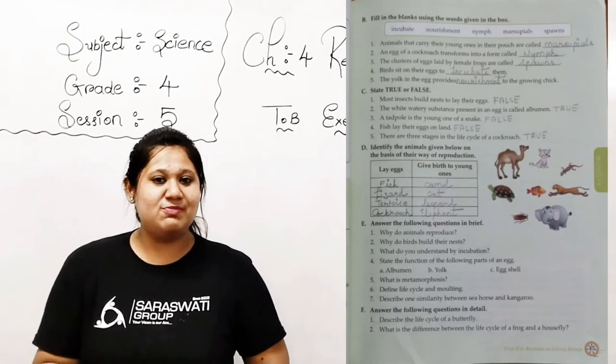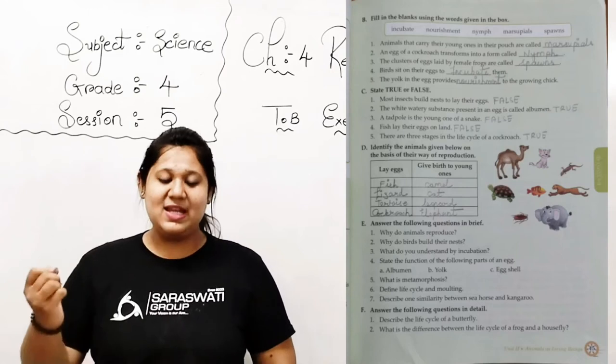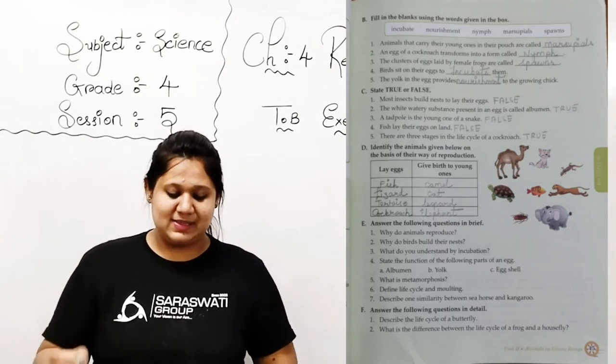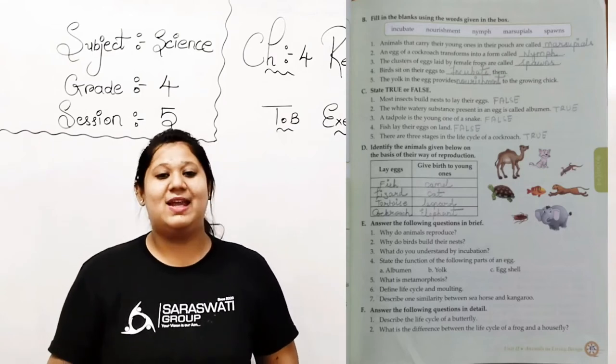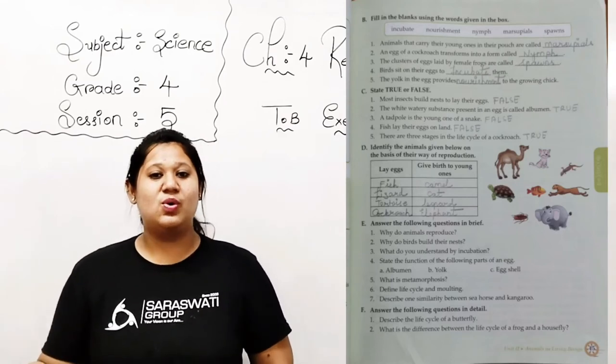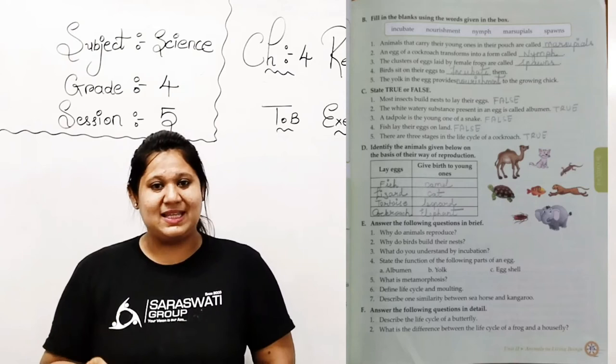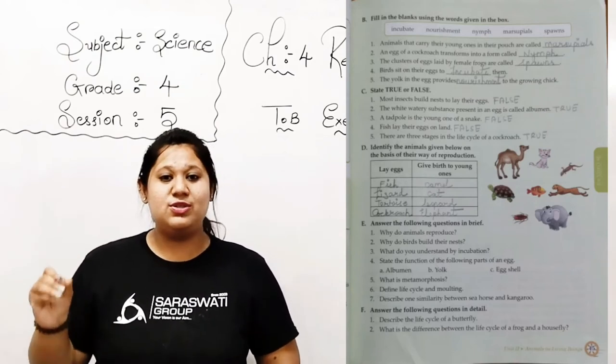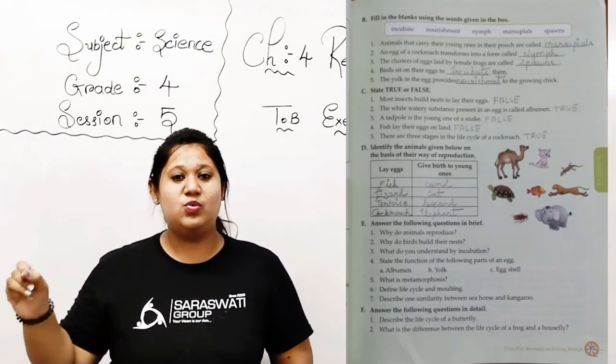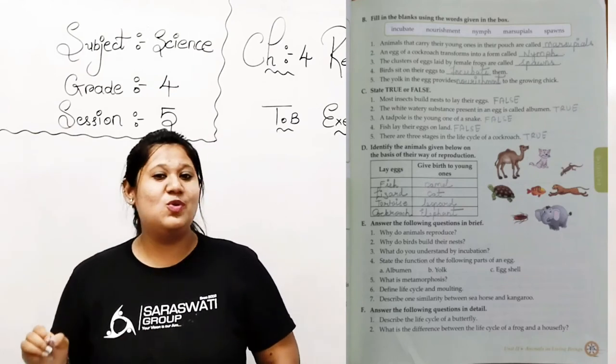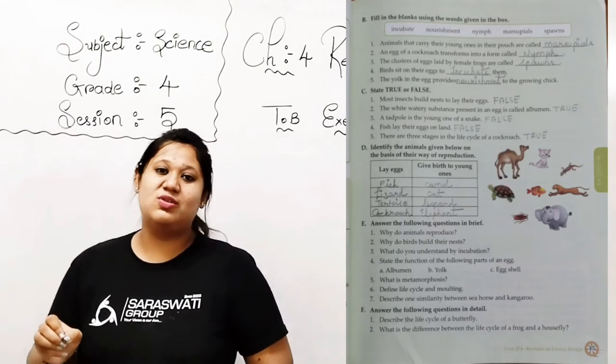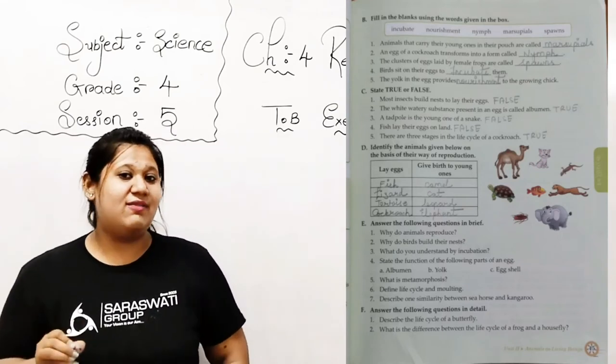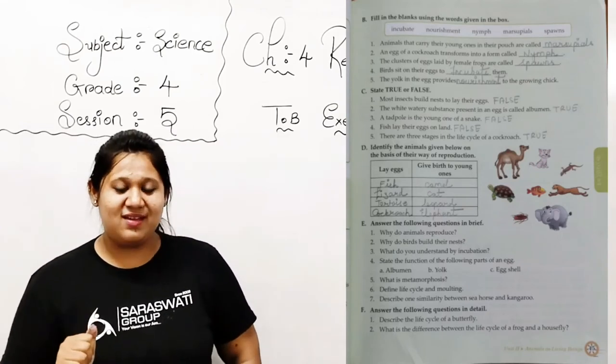So here we completed our question number 2. Now let's begin question number 3: state true or false. Kids, if the statement is correct, then you are supposed to write down true. If the statement is incorrect, then you are supposed to write down false. You need to write down false, true and false. You are not supposed to write down T, F, okay? This is my strict instruction. I am not going to check your book, okay?